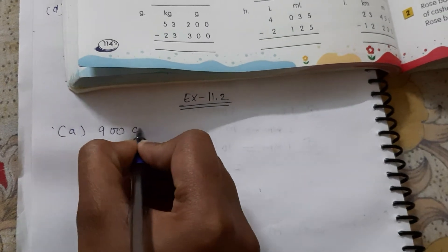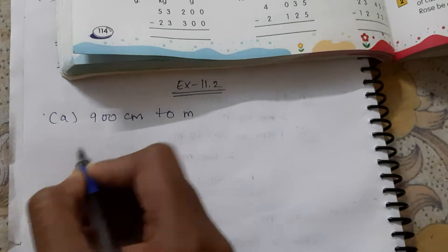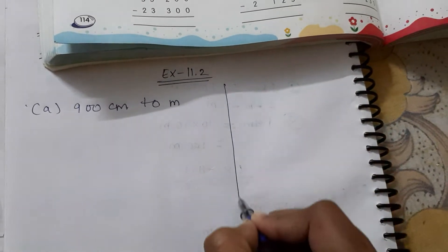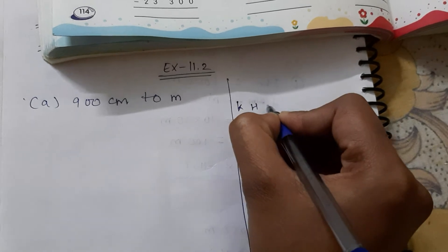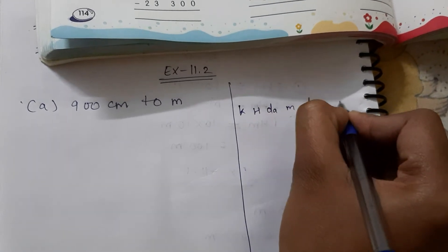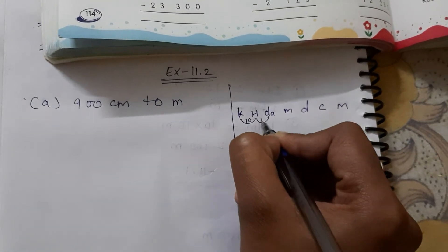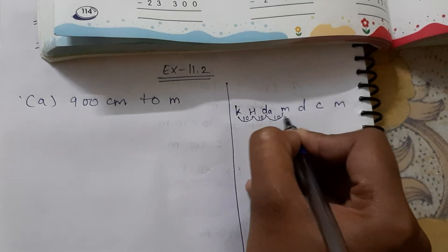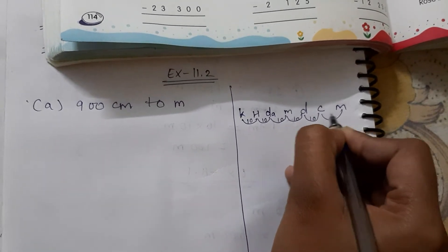900 centimeter to meter. Again, I'll draw here in a column the rule. King Harry died, mother did not cry much. In between, the relation is 10, 10, 10.